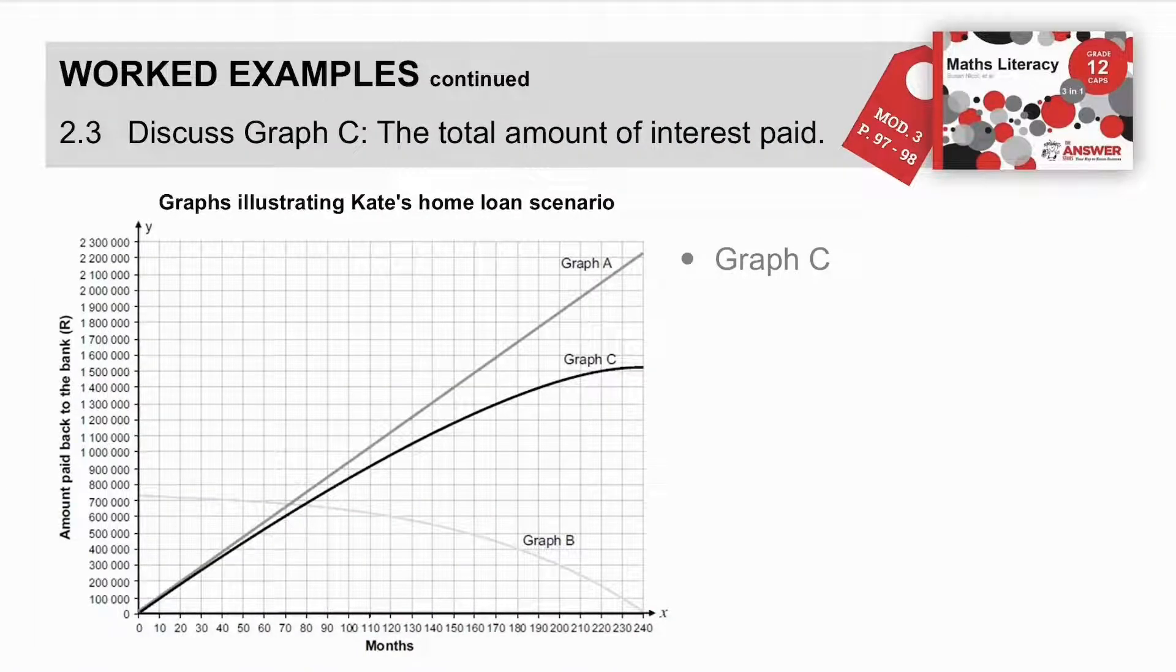Last one. Graph C. Determine or discuss the total amount of interest that is being paid. So, if we go to graph C, there it is. Straight line. And, then something happens. Maybe around 190 months. Something happens. My graph starts curving.